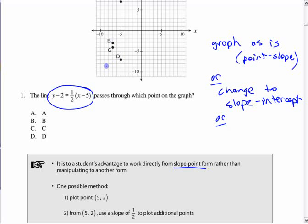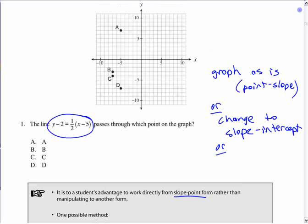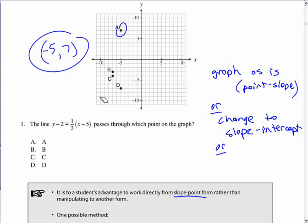It says that line passes through which point. If you know how to graph this directly, you can graph it. Graph as it is now, point slope form. Or what else could you do? Change it to some other form. Change to slope intercept. Or failing all else, if you are looking at these points you could always just test the points in there. If the line passes through a point, the coordinates should work if you put them in for x and y. You could just test them.